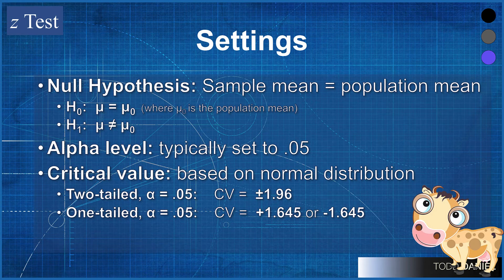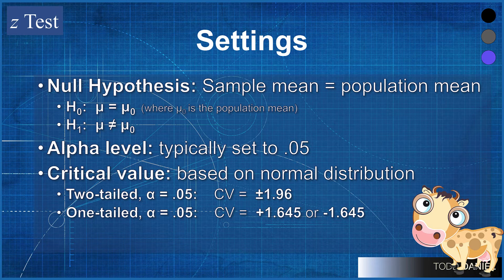The settings for a one-sample z-test begin with a null hypothesis that the sample mean is the same as the population mean — the sample should be the same as the population from which it was drawn. We would write this in symbols as H₀: μ = μ₀, where we substitute the actual population mean — in this case, 0.5.